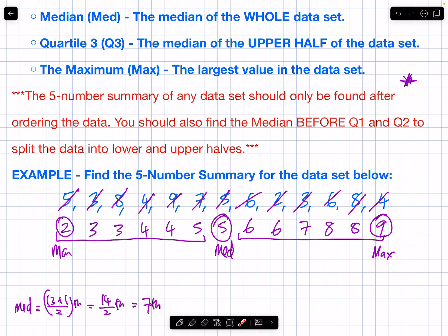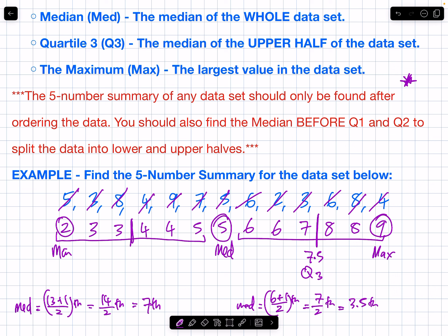Now we can calculate Q1 and Q3. There are 6 values in each half. The median position = (6 + 1) ÷ 2 = 7 ÷ 2 = 3.5th position, so the median is halfway between the 3rd and 4th values. For the upper half, Q3 is halfway between 7 and 8, giving Q3 = 7.5. I don't need to repeat this calculation — there are also 6 numbers in the bottom half, so Q1 is halfway between the 3rd and 4th values there, which are 3 and 4.